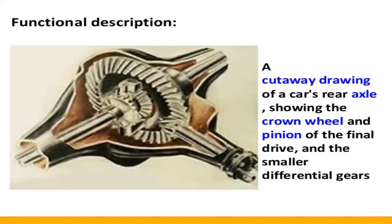The functional description: a cutaway drawing of a car rear axle shows the crown wheel and the pinion of the final drive and the smaller differential gears. Different types and sizes of gears are used to convert the motion of the propeller shaft to the differential axles. The differential axles are connected to the differential, and the crown wheel converts the motion to rotate the wheels of the automobile.